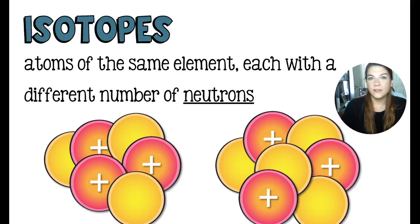To begin, we have the definition of isotopes, which is two or more atoms of the same element, each with a different number of neutrons. I sometimes describe it as having a weird number of neutrons.